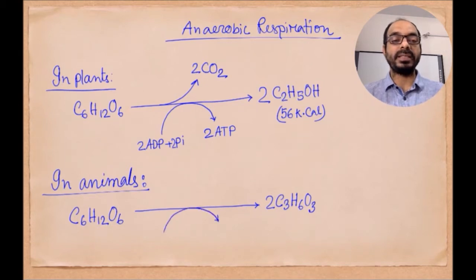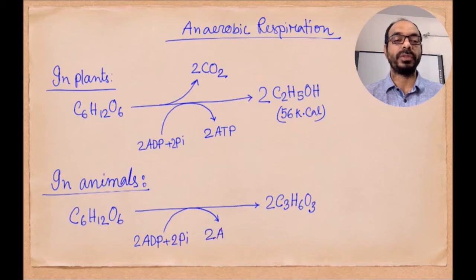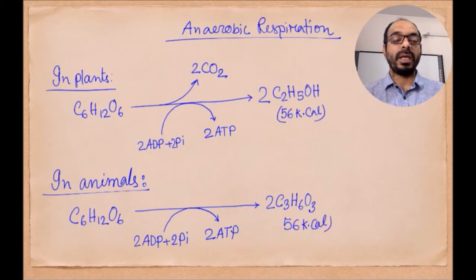In this reaction oxygen is absent. For this reason, a low amount of ATP is produced — two molecules of ATP from one molecule of glucose. In total, from one molecule of glucose in the animal body, it produces 56 kilocalories of energy.